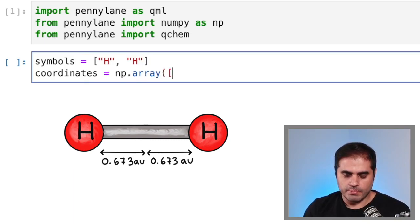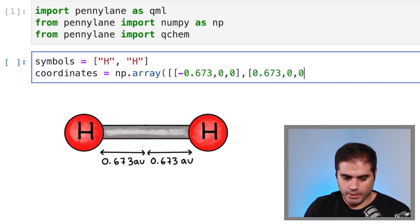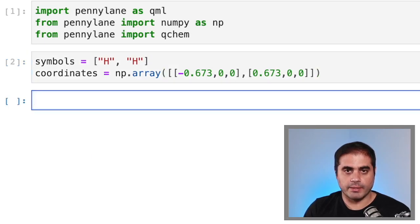And then we need an np array. And then we need to specify the x, y, and z coordinates for each atom. So the first one will be at minus 0.673. And then zeros for the other coordinates. Shift Enter. And we have defined our molecule.